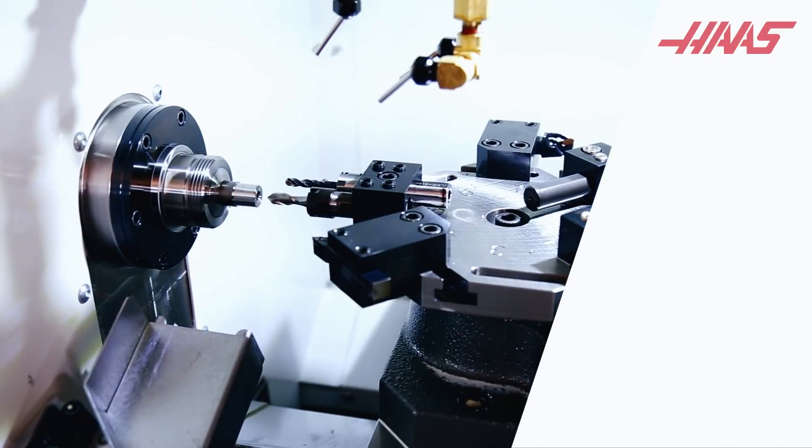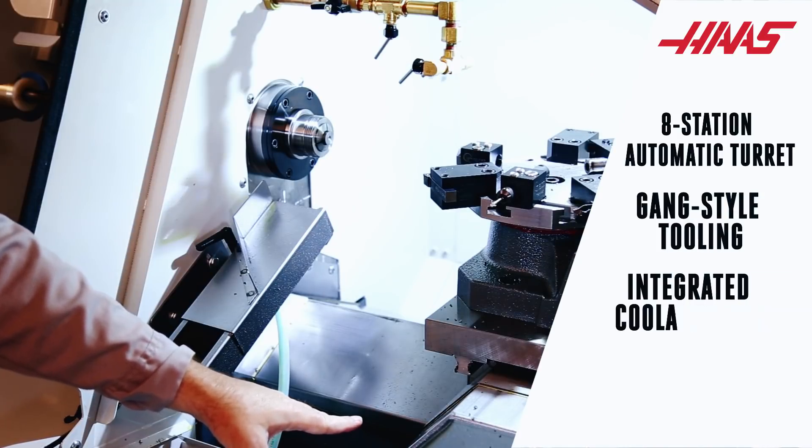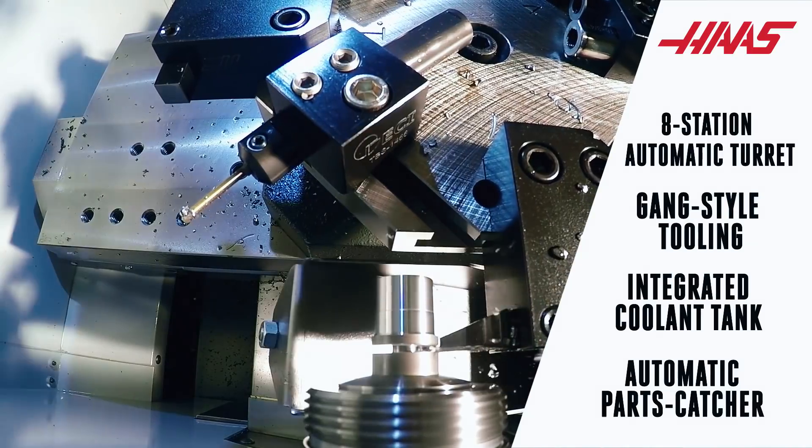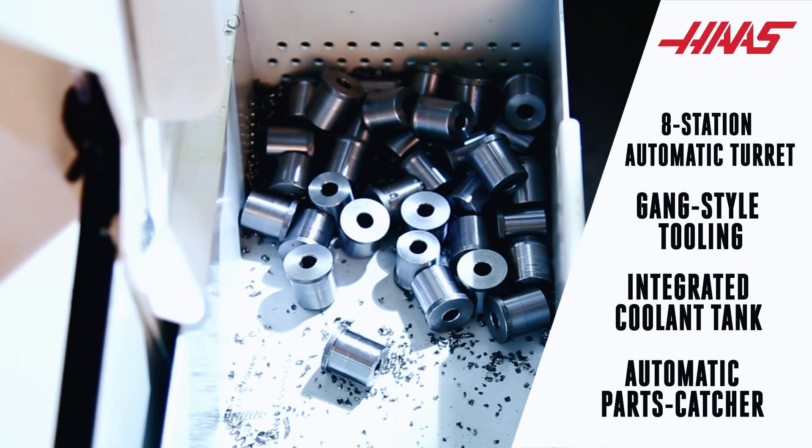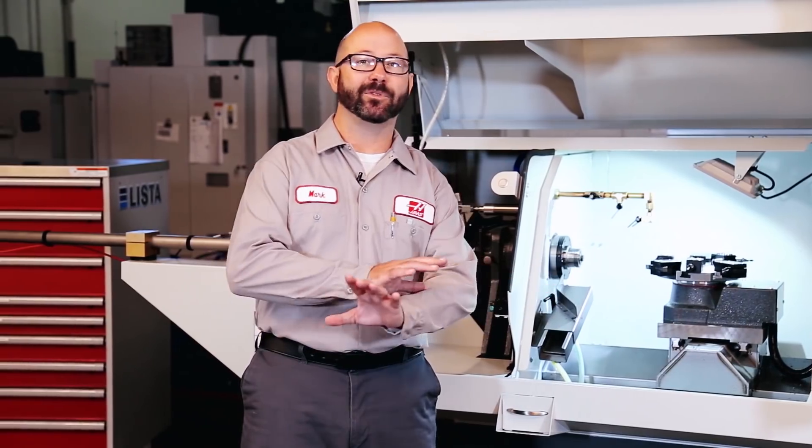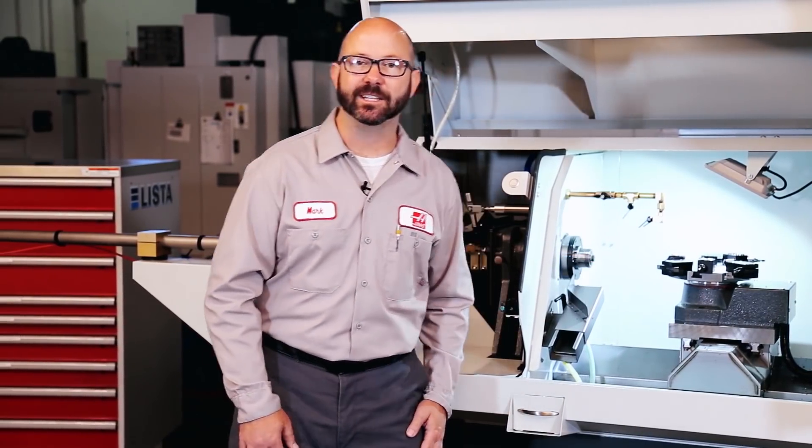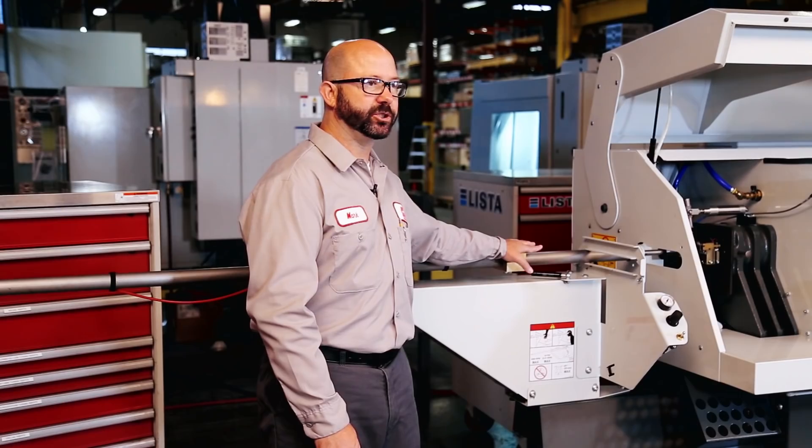This video is for you. This lathe has an eight station automatic turret with gang style tooling, an integrated coolant tank, and an optional automatic parts catcher. But the most unique feature on this lathe, what might be different than any Haas lathe you may have run in the past, is its optional pneumatic bar pusher.